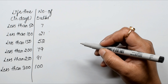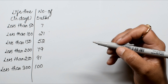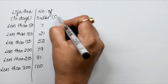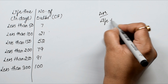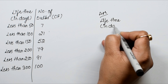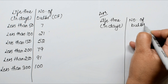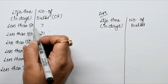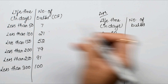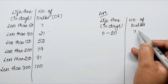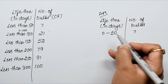From this table we construct a frequency distribution table with class interval and frequency. We write lifetime in days and number of bulbs. Less than 50 means the class interval 0 to 50, with 7 bulbs — the cumulative frequency stays as is. Less than 100 means 50 to 100.